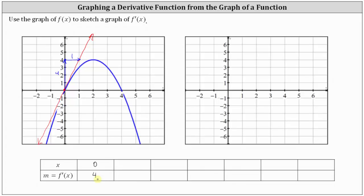Because of the symmetry of the parabola, let's now find the slope of the tangent line at x equals four, which is this point here. The tangent line would look like this. From the point of tangency, notice how if we go down four units and right one unit, we find another point on the tangent line. The vertical change is negative four, the horizontal change is positive one. The slope of the tangent line is negative four at x equals four. When x is equal to four, the slope of the tangent line is negative four. The graph of the derivative function contains the point four comma negative four.